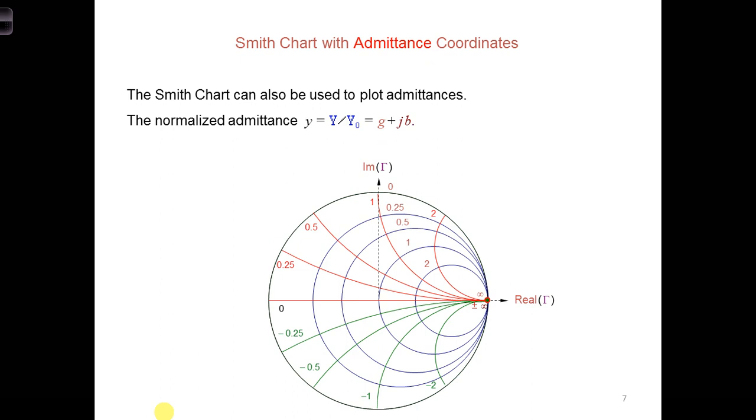And here, to convert a Smith chart for impedances to a Smith chart for admittances, we reflect the impedances through the origin, so through this dot. When we do that, then we have the corresponding admittance.